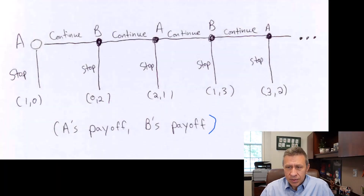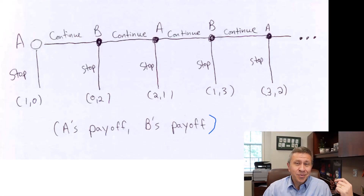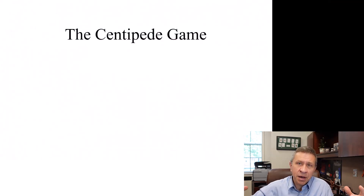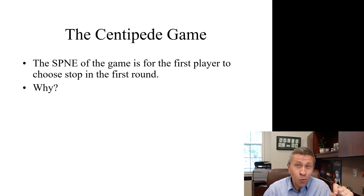Now the centipede game looks like this on the diagram. The key question: what is the Nash equilibrium of the centipede game? This is a weird one, because if they continue on for 20, 30, or 40 rounds, payoffs grow into the dozens of dollars — but the sub-game perfect Nash equilibrium of this game is actually to stop in the very first round.